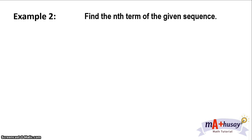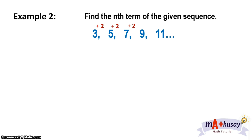Let's have example number 2. Our goal is to find the nth term of the sequence. The sequence we have is 3, 5, 7, 9, and 11. As we can see, the terms after the first can be generated by adding 2 to the preceding terms. The first term is 3, add 2 and you get 5; from 5, add 2 and you get 7; add 2 to 7 and you get 9, and so on. Since we're adding 2, 2 will be the numerical coefficient of n, so a sub n equals 2n.